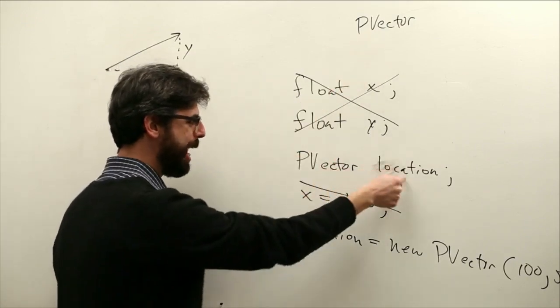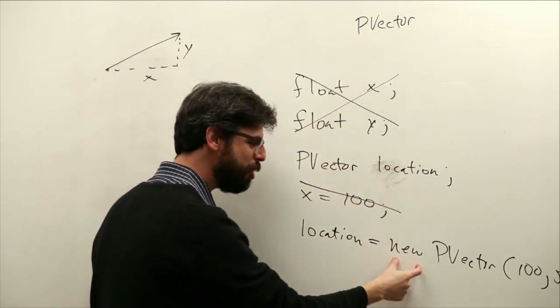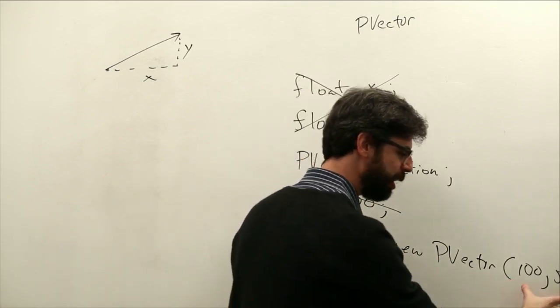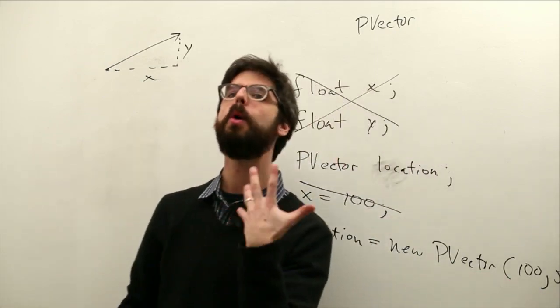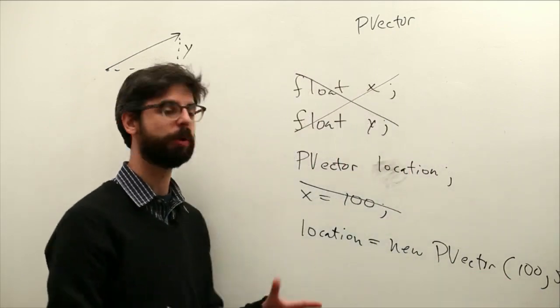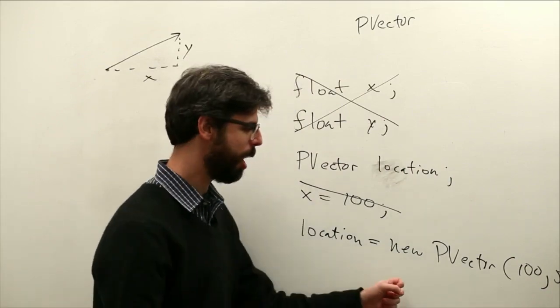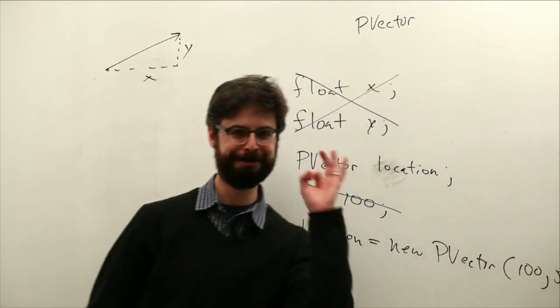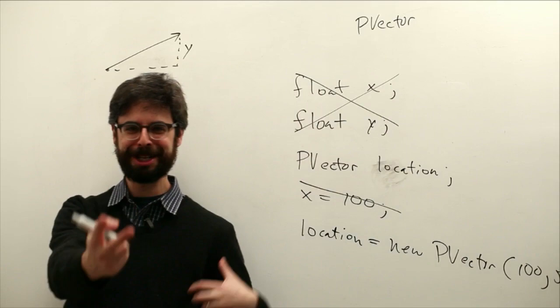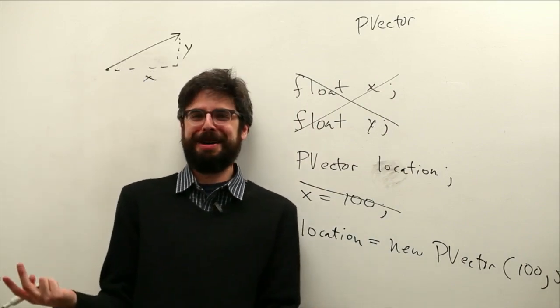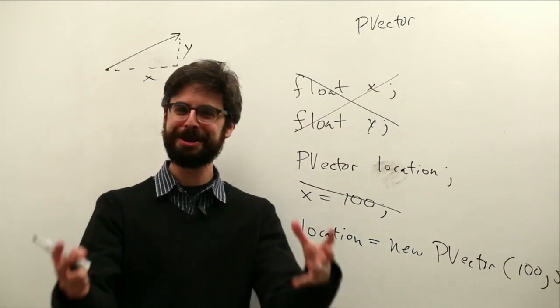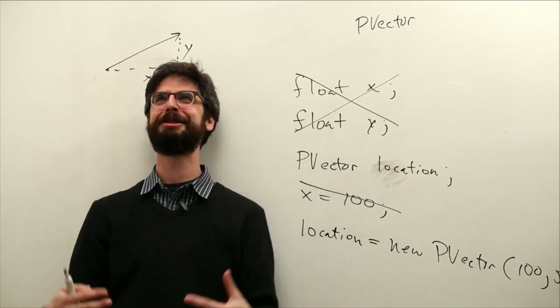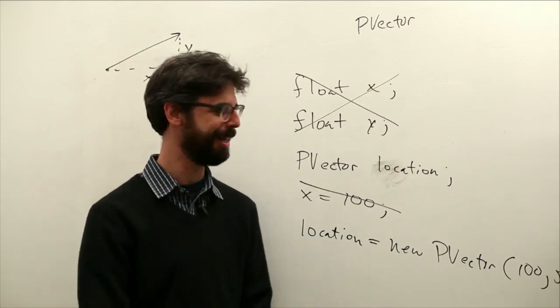PVector location. We say location is a new instance of a PVector object. And the constructor takes two or three arguments. So in our case, we're dealing with two dimensional vectors. PVector 100 comma 50. Everybody OK? I don't know if there is an everybody. Maybe you're like a large group of people just sitting in some strange audience watching this video. I seriously doubt that.